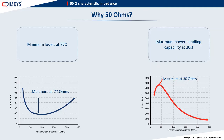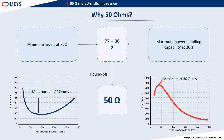To find a compromise between low transmission loss and high power handling capability, we can take the average of the corresponding characteristic impedances. With engineering roundoff, this results in a characteristic impedance of 50 ohms.